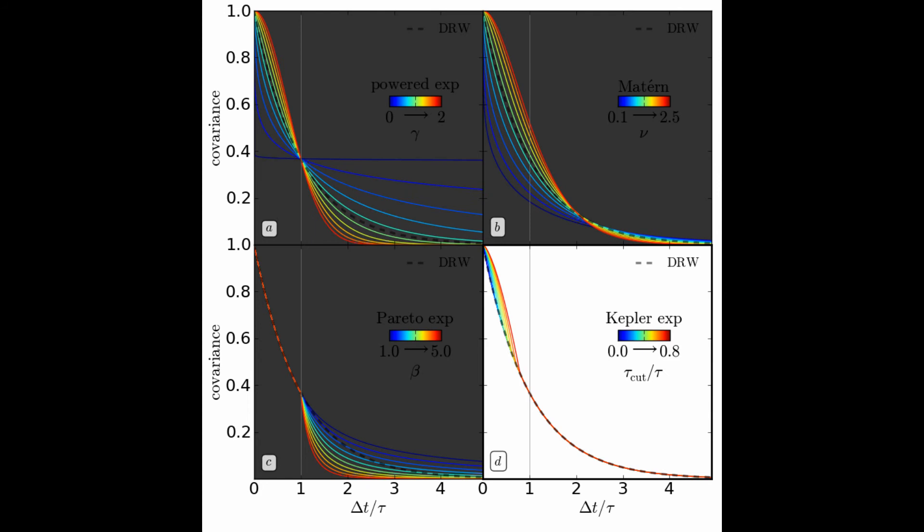On the bottom right is the Kepler exponential model. The additional parameter tau cut is defined as the timescale below which the correlations are stronger than the DRW model. This modification is motivated by the recent findings of Mushotzky et al. from Kepler. The DRW model is recovered when tau cut equals 0.